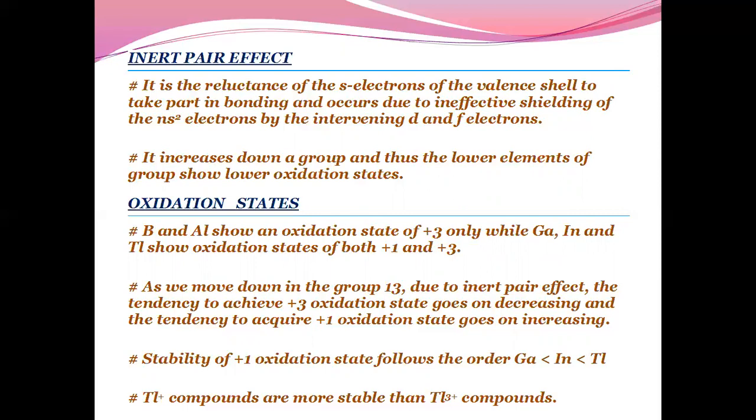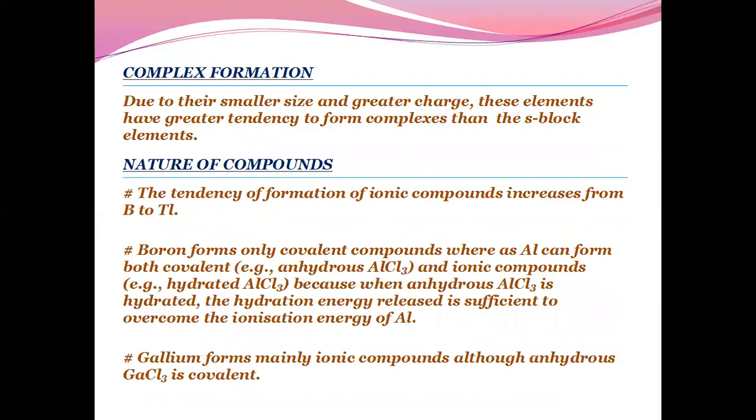Oxidation states: Boron and aluminium show an oxidation state of plus 3 only, while gallium, indium and thallium show oxidation states of both plus 1 and plus 3. As we move down the group, plus 3 oxidation state decreases and the tendency to acquire plus 1 oxidation state increases because of inert pair effect and poor shielding effect. Stability of plus 1 oxidation state follows: gallium less than indium less than thallium. Thallium in plus 1 oxidation state is more stable than in plus 3 oxidation state.